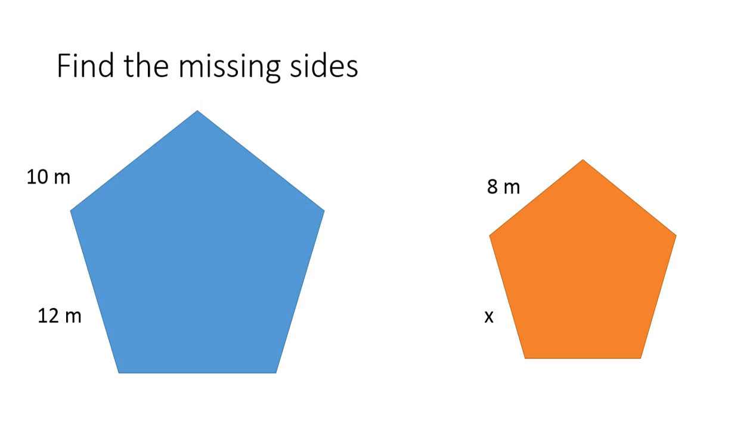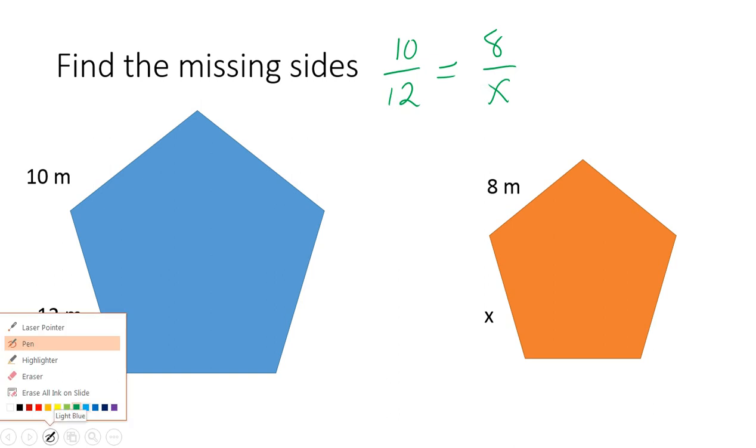The easiest way to do it is just setting up as a proportion, which we talked about when we did similarity. So you can go 10 over 12. I picked one, the first pentagon, is equal to 8 over X. And then from there, what you're going to do is you're going to cross-multiply and solve.